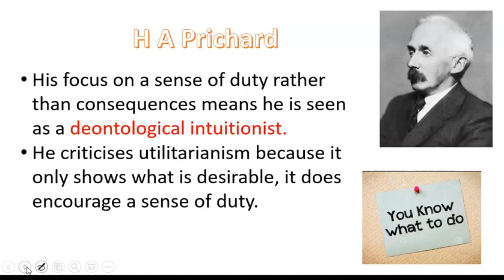Pritchard criticises utilitarianism because he says all it can do is say that something would be popular or desirable — it doesn't create that sense of duty that Pritchard says we all feel, and which is what makes those ethical decisions for us. That's another difference between Pritchard and Moore: remember Moore was about producing the best consequences, very much influenced by utilitarianism, whereas Pritchard is criticising utilitarianism. Utilitarianism has been in the background of all our meta-ethical theories so far — remember that Bradley was both influenced by and rejected elements of utilitarianism. Bradley, of course, is our philosopher for naturalism, and when we come back round to study utilitarianism, we will return to some of this.